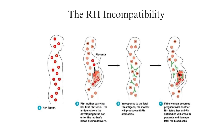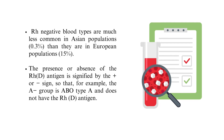Consider an RH-positive father and an RH-negative mother carrying her first RH-positive fetus. RH antigens from the developing fetus can enter the mother's blood during delivery, and in response the mother will produce anti-RH antibodies. If the woman becomes pregnant with another RH-positive fetus, her anti-RH antibodies will cross the placenta and damage fetal red blood cells. RH-negative blood types are much less common in Asian populations than in European populations. The presence or absence of the RH-D antigen is signified by the plus or minus sign — for example, the A-negative group is ABO type A and does not have the RH-D antigen.